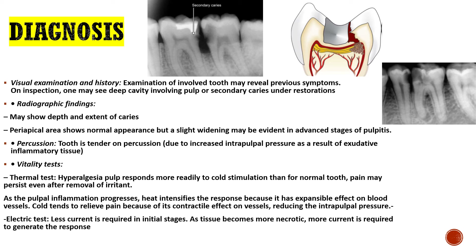For diagnosis of irreversible pulpitis, the most common method is visual examination and patient history. In visual examination you will see a deep cavity involving the pulp or secondary caries under a restoration. Radiographic findings show the extent and depth of caries involvement and pulp involvement. In later stages, widening of the PDL may also be visible on radiograph, indicating apical periodontitis. Percussion test: the tooth is positive on percussion.